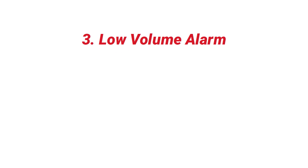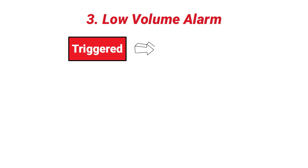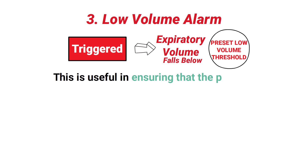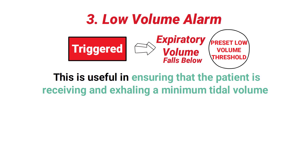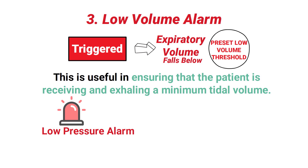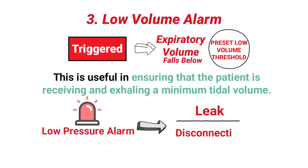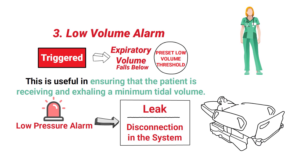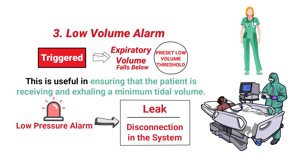Next up is the low volume alarm. A low volume alarm in mechanical ventilation is triggered whenever the expiratory volume falls below a preset low volume threshold. This is useful in ensuring that the patient is receiving and exhaling a minimum tidal volume. Similar to the low pressure alarm, this alarm will also sound whenever there is a leak or disconnection in the system. When this occurs, the respiratory therapist must ensure that the patient is being ventilated and provide manual breaths if necessary until the source is identified and corrected.